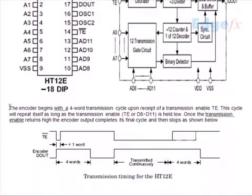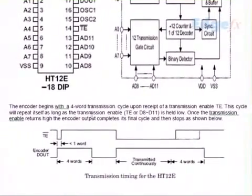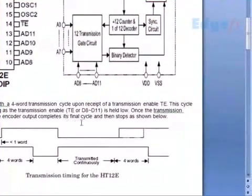The encoder begins with a 4-word transmission cycle upon receipt of transmission enable low. This cycle will repeat itself as long as the transmission enable or D8 or D11 is held low. Once the transmission enable returns high, the encoder output completes its final cycle and then stops, as shown in the timing diagram below.